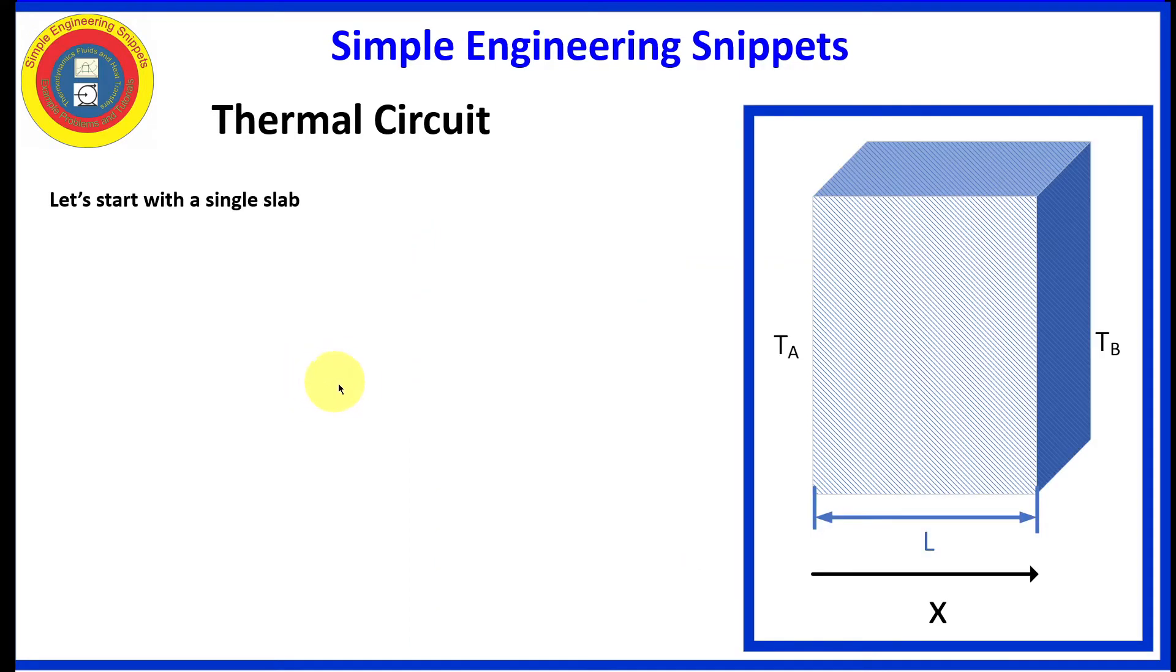Let's start with a single slab, and we're doing this as a building block to be able to tackle the more complex problem. While we're doing this, we are going to find an expression for the heat transfer rate through the slab. And in so doing, we'll be able to determine the equation for thermal resistance for heat conduction through a slab.